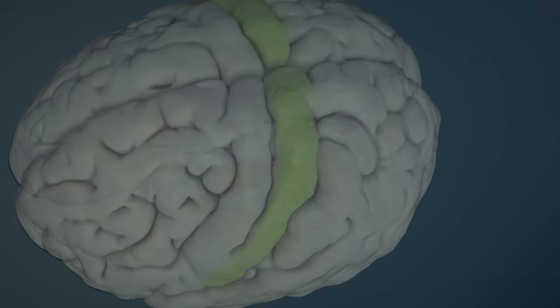It is important to note that the left side of the brain receives signals from the right side of the body, and the right side of the brain receives signals from the left side of the body.